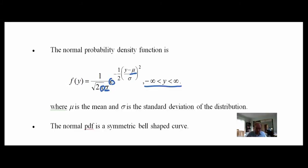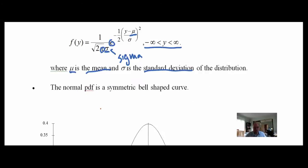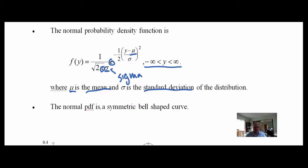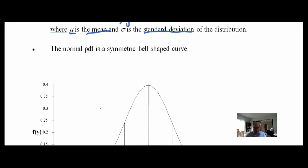We have our mean mu, and sigma — the standard deviation of the distribution. With these two parameters, everything else is controlled. A PDF — probability density function — is a symmetric bell-shaped curve. Everything else in the equation is determined by mu and sigma.